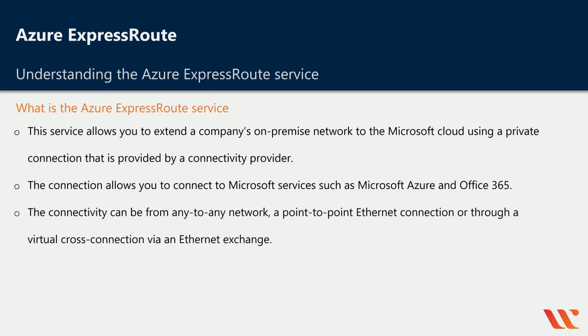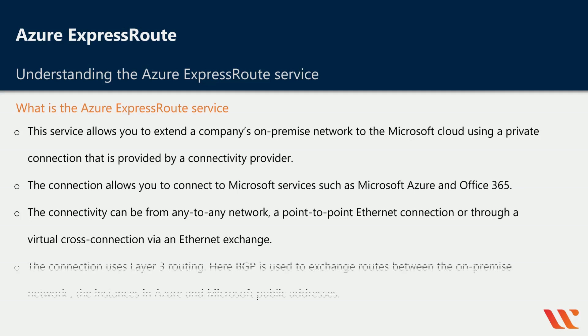The connectivity can be from any-to-any network, a point-to-point ethernet connection, or through a virtual cross connection via an ethernet exchange. The connection uses Layer 3 routing — BGP is used to exchange routes.